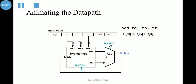Let us see the animation of this data path performing the addition operation. The register file gets the register numbers of three registers — two to read input data and one register number to be written. The data read from the registers is fed into the ALU to perform the addition operation. The result is then fed via the write data signal into the register number specified to be written by the instruction.